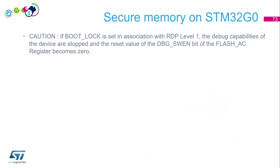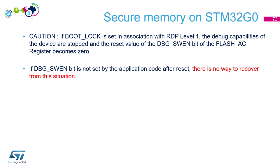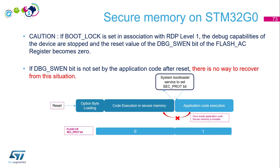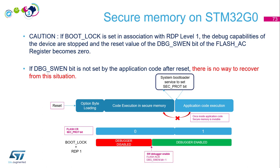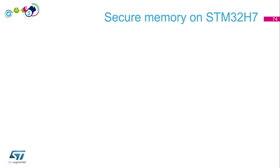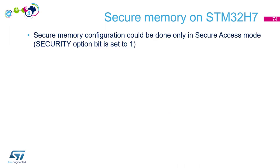For the G0, there is an additional feature: if you combine the bootlock with RDP level 1, then by default the debugger will be disabled. Caution: if you do not have the re-enable of the debugging link inside your code, you are at RDP level 1 but cannot connect at all — not even through the bootloader. There is no way to recover from this situation. So if you erase your chip and do not have the debugger re-enable in your code under this configuration, your board is bricked.